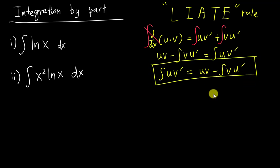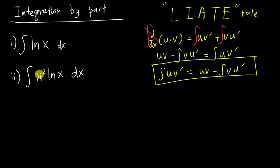We use this formula to integrate difficult expressions like ln(x) or x² ln(x). The challenging part is knowing which part to call u and which to call dv or v'. We have a rule to follow called LIATE.